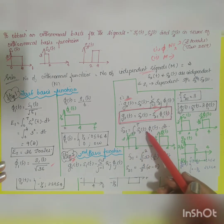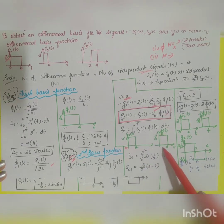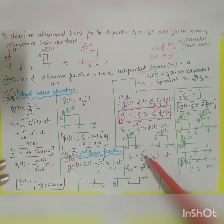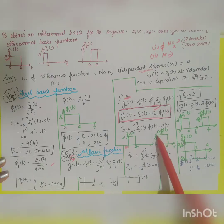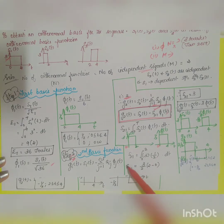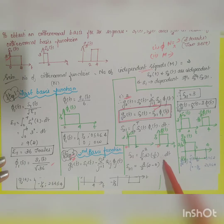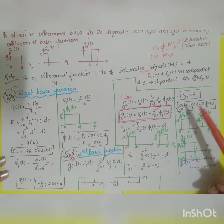s₂₁ = ∫₀^T s₂(t) · φ₁(t) dt. s₂(t) has amplitude 3 over 0 to 2; φ₁(t) is 1/2 over 0 to 4. The common interval is 0 to 2, so s₂₁ = ∫₀² 3 × (1/2) dt = (3/2) × [t]₀² = (3/2) × 2 = 3. Therefore s₂₁ = 3.